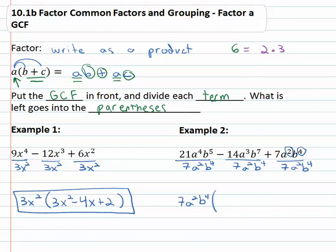21 divided by 7 is 3, a to the fourth over a squared is a squared and then we're left with 1b. Negative 14 divided by 7 is negative 2, a cubed over a squared is a, b to the seventh over b to the fourth is b cubed, subtracting the exponents again.